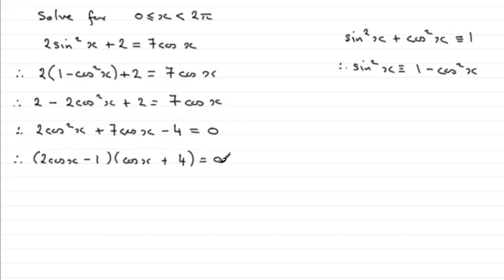Each one of these factors could be equal to zero, so therefore 2cosx - 1 as one factor could equal zero, or the other factor cosx + 4 that could equal zero. This one's very easy to spot the solution of. We could take 4 from both sides and that will give us cosx = -4. And knowing that cosine of x goes between -1 and 1, then there's going to be no solution for this.